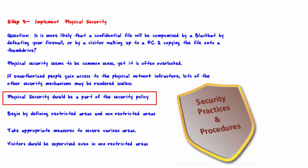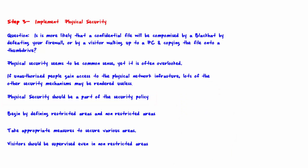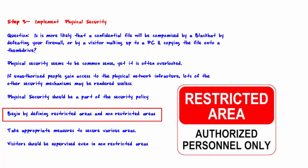Physical security should be made part of your security policy, so make sure that you write that in. Begin by defining restricted areas and non-restricted areas. Obviously, a server room should be a restricted area. Network equipment such as routers, firewalls, patch panels, and cabling should also be in a restricted area.